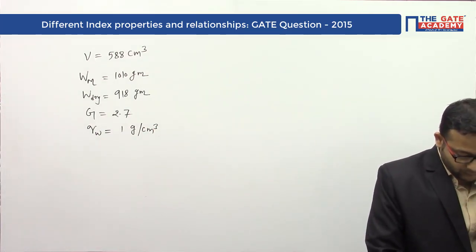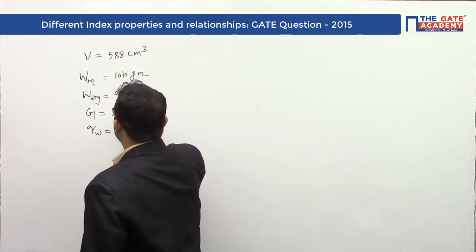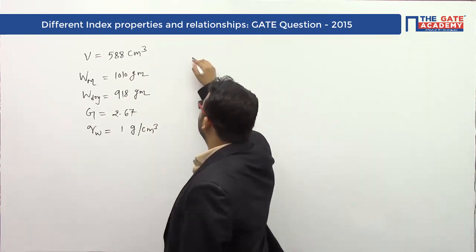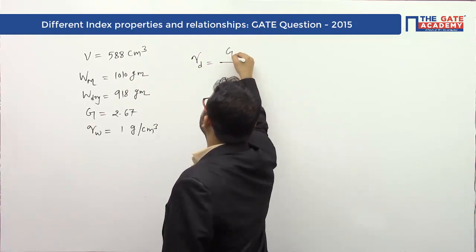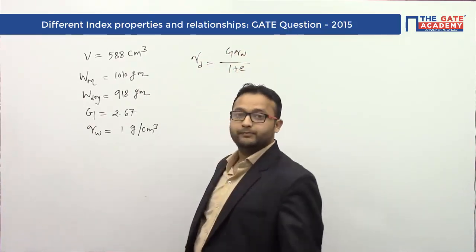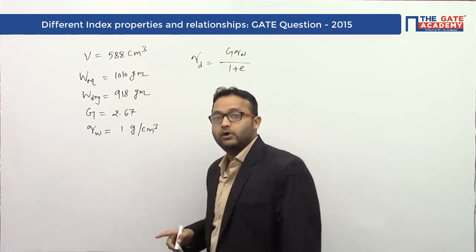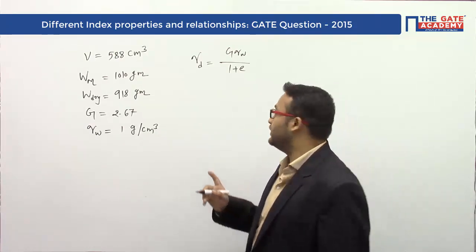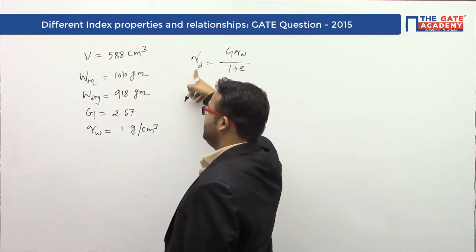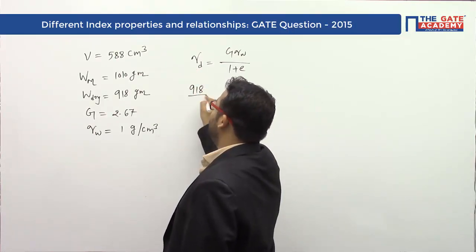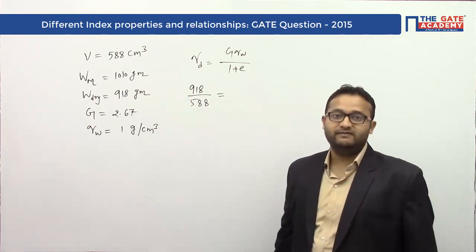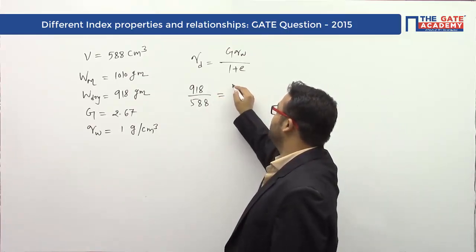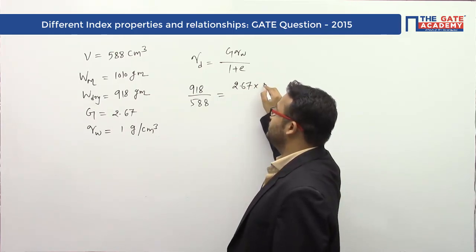We want to estimate the void ratio. I know the formula: gamma_dry equals G times gamma_w divided by (1 + e). Gamma_dry can be calculated as the dry weight divided by total volume, which is 918 divided by 588. Setting this equal to G times gamma_w over (1 + e), where G is 2.67 and gamma_w is 1 gram per centimeter cube.